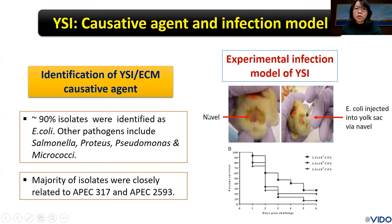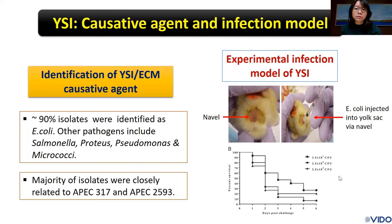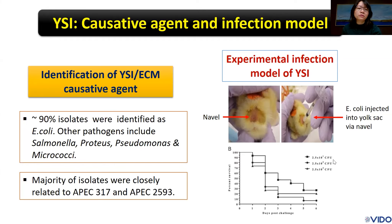In the challenge model, we used the navel route as it is the natural route for yolk sac infection. We used three different doses ranging from 25 CFU per bird to 2,500 CFU per bird at the one-day-old stage. At the lowest dose of 25 CFU per bird, this caused around 70% mortality after six days of challenge, so we used this challenge dose for our further studies.